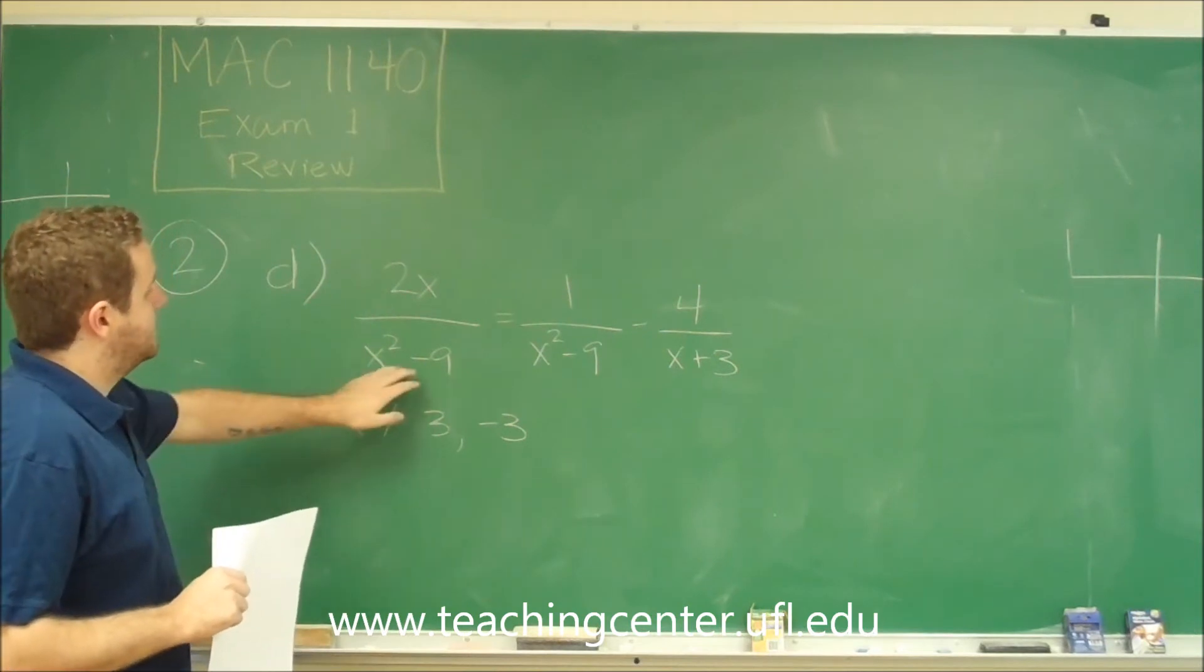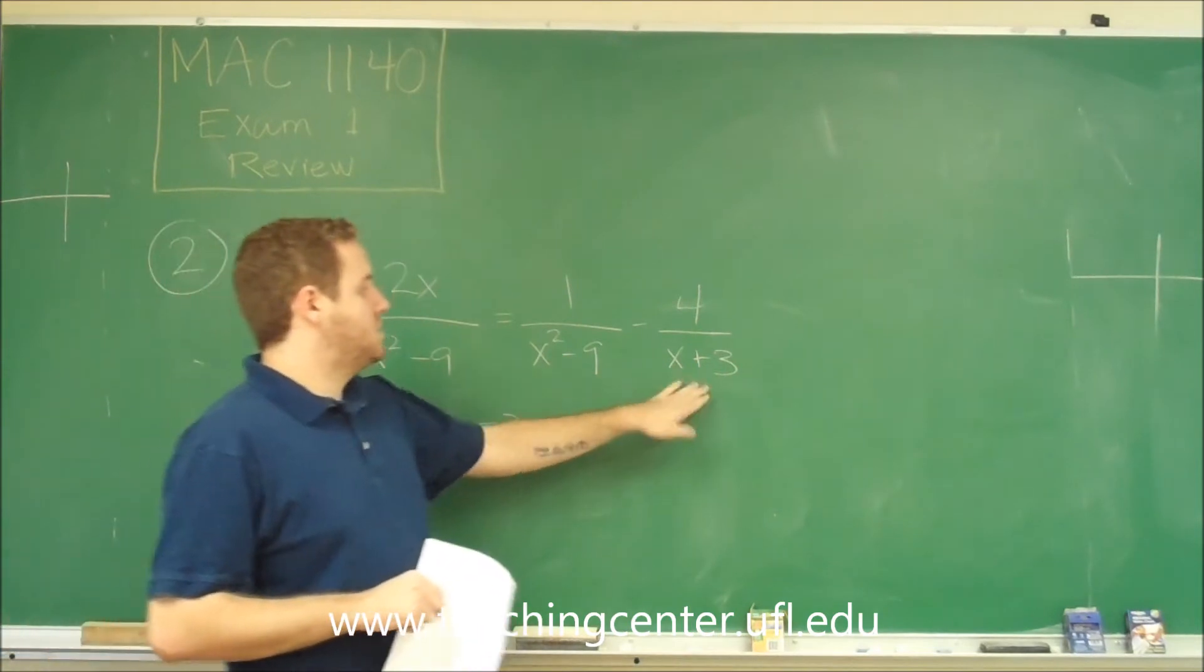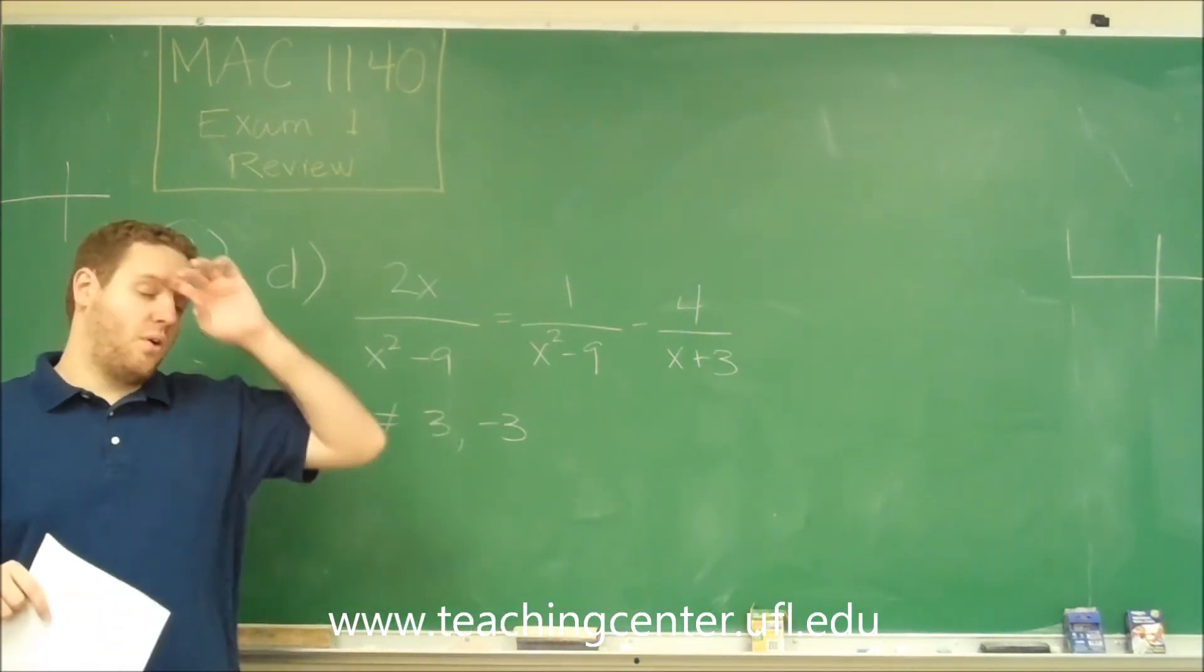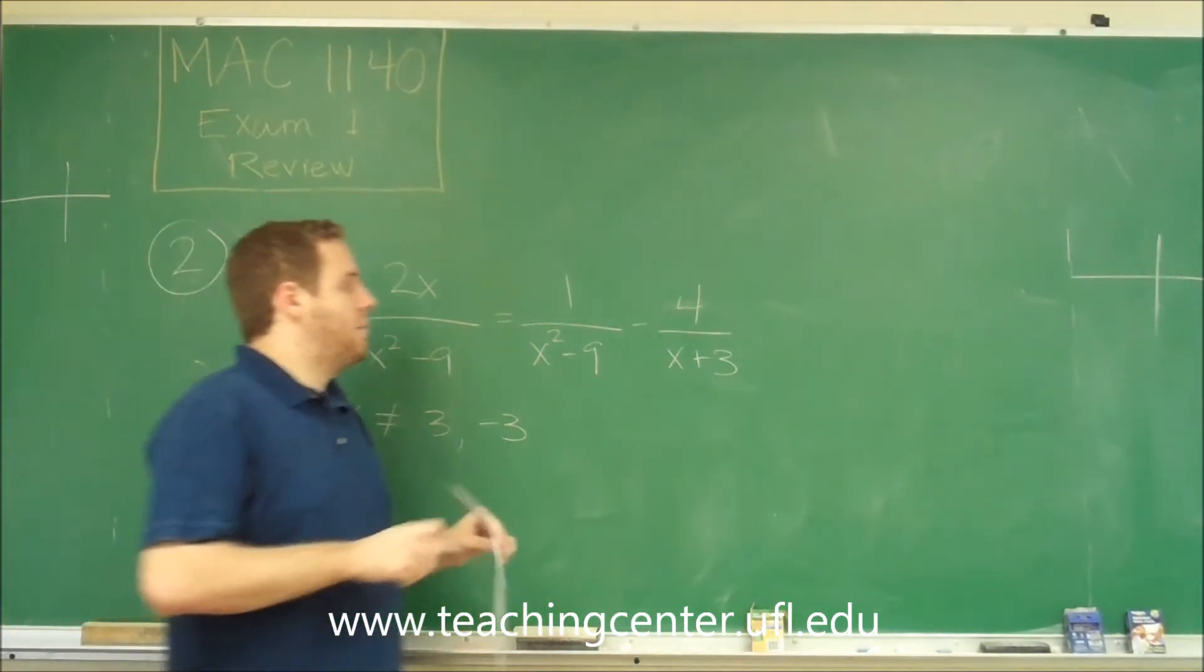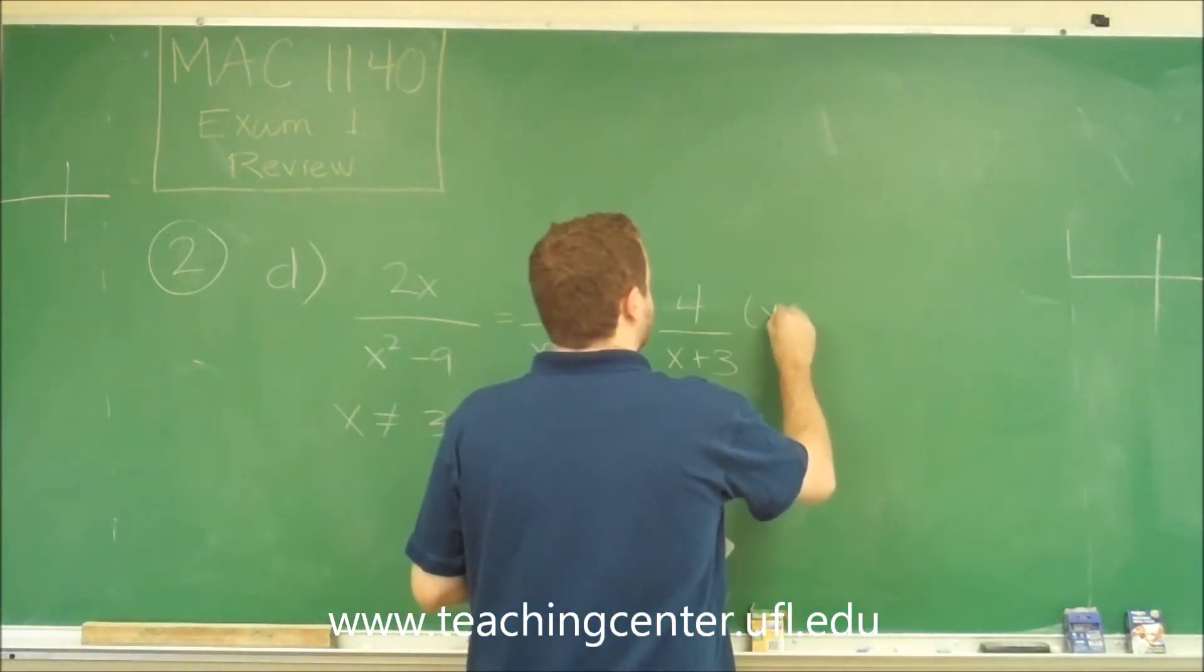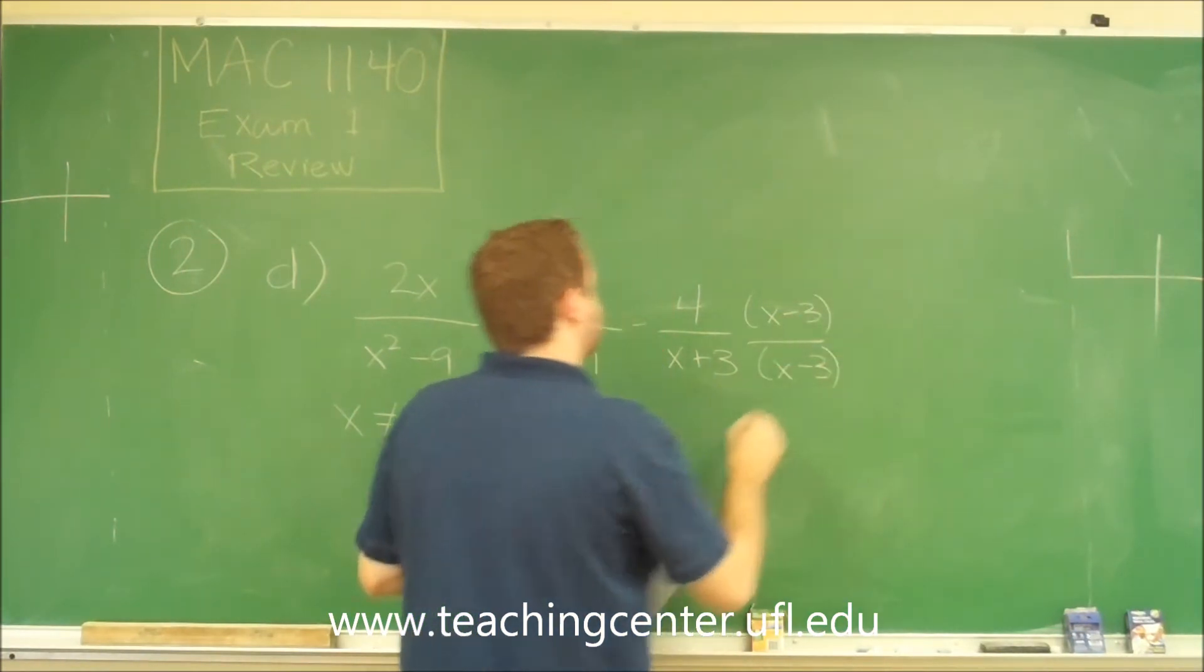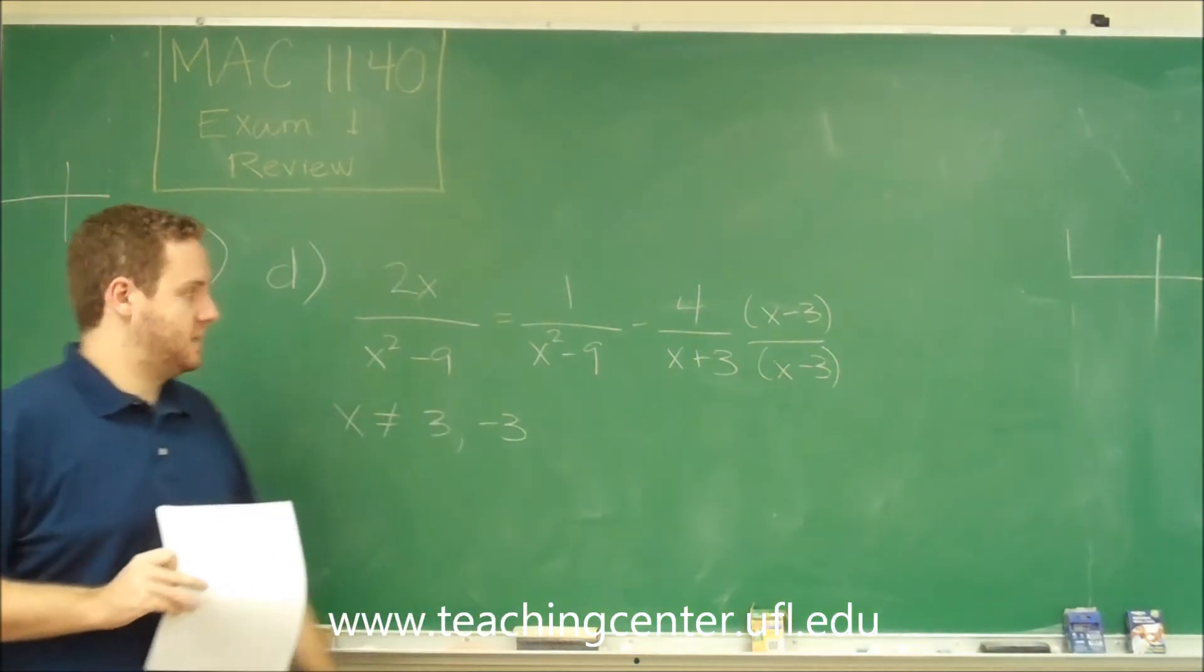Now though, this has a denominator of x squared minus 9. This has a denominator of x squared minus 9. If this one also had a denominator of x squared minus 9 we could get rid of all of them by just multiplying the equation by that. So we can do that by multiplying this fraction at the end by x minus 3 over x minus 3 because x plus 3 times x minus 3 is x squared minus 9.